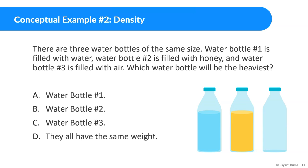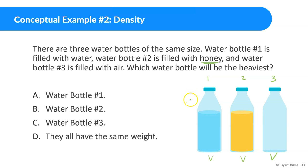Next question: there are three water bottles of the same size. Bottle one is filled with water, bottle two is filled with honey, and bottle three is filled with air. They're the same size, meaning they all have the same volume. Which water bottle will be the heaviest? Since we know honey is the most dense, and they all have the same volume, water bottle number two will be the heaviest.